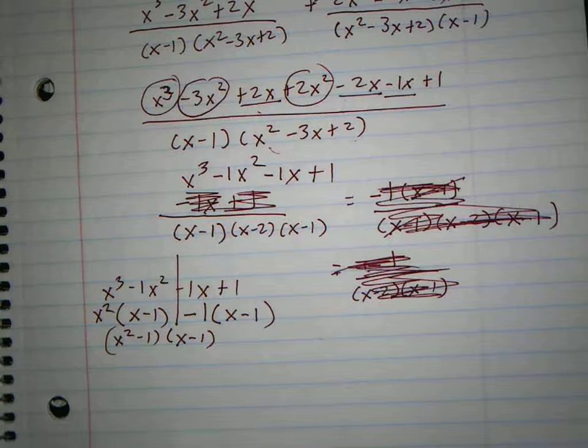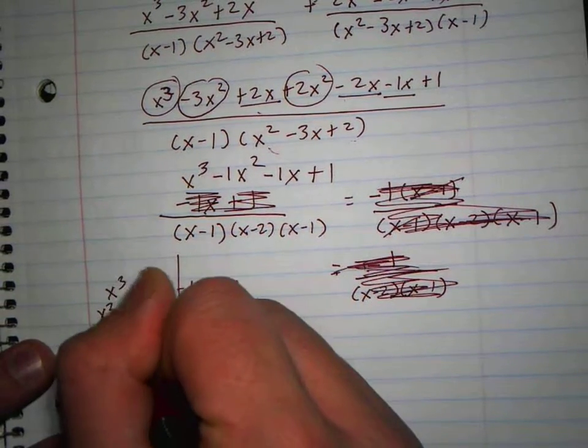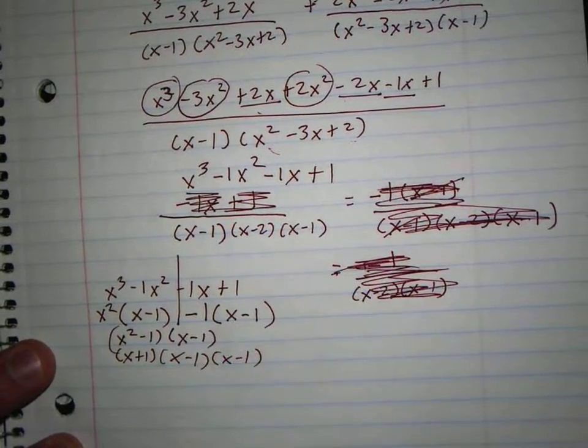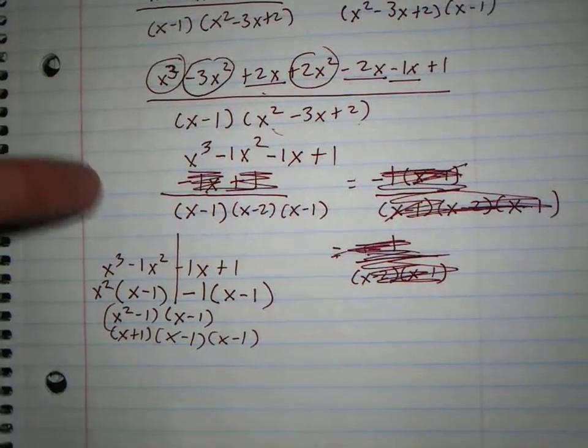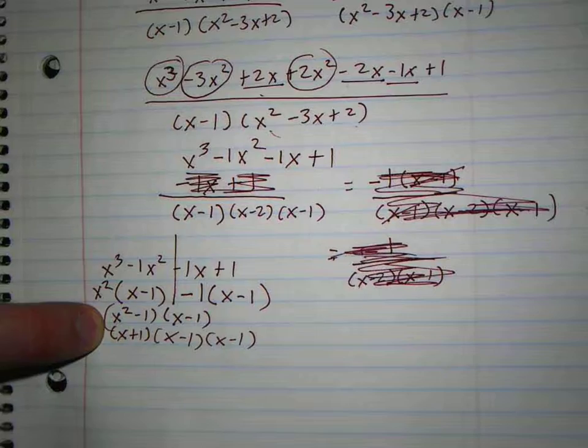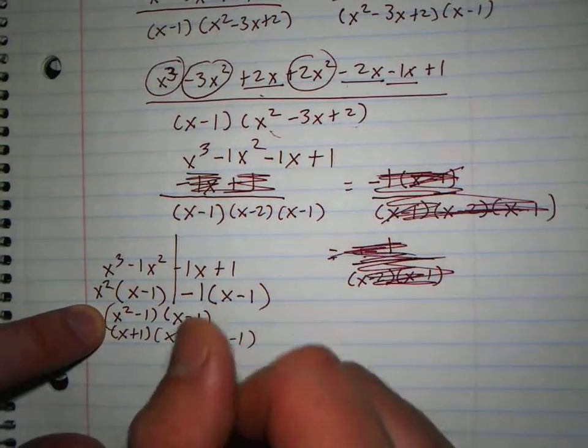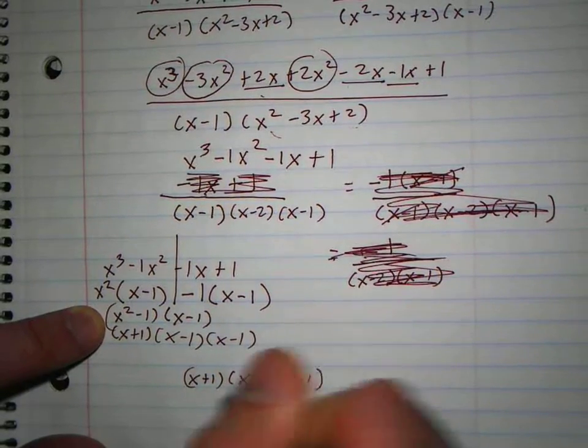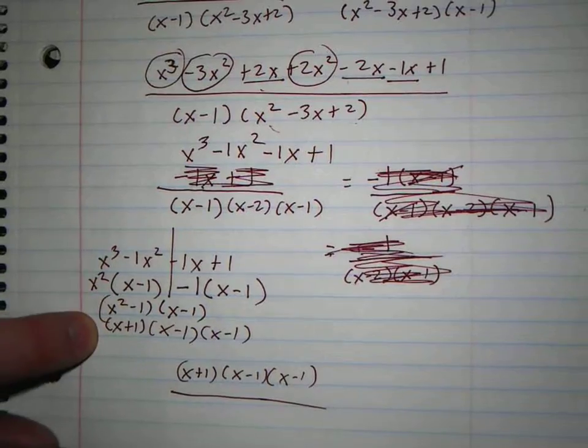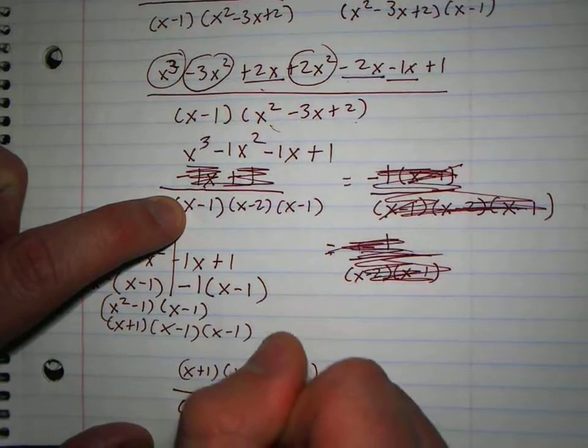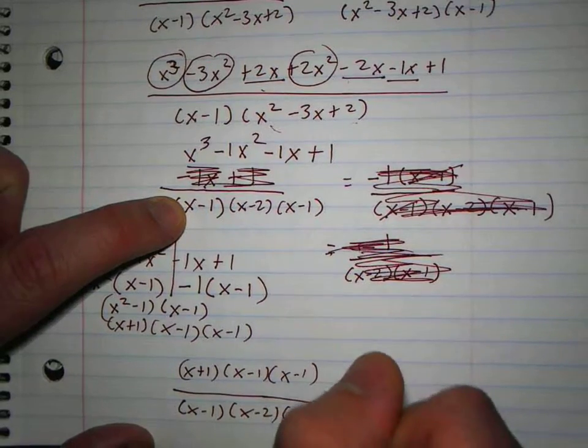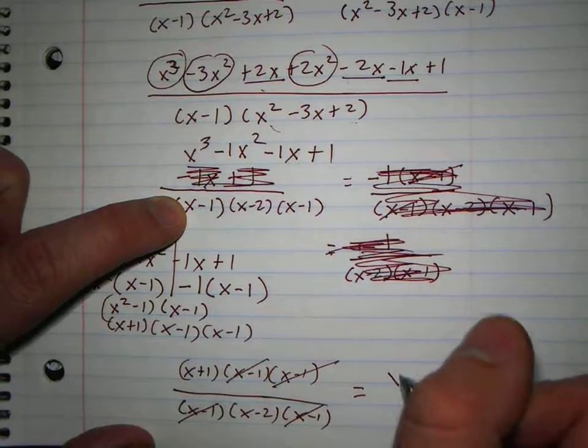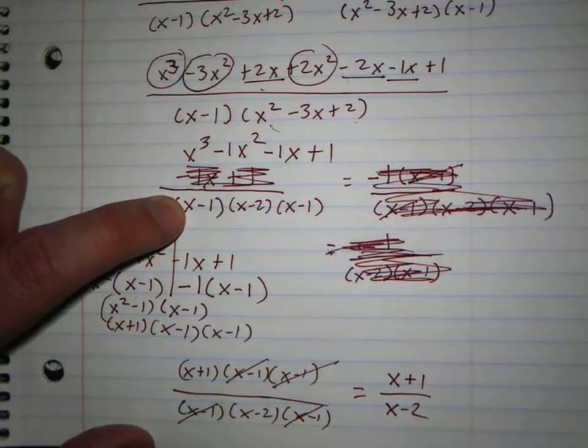So here I would get x squared minus 1 and then x minus 1. And then x squared minus 1 factors. That's x plus 1, x minus 1. So I can replace this with x plus 1, x minus 1, x minus 1. So this is the same thing as this, and that's over x minus 1, x minus 1. X minus 1 cancels, x minus 1 cancels, so I get x plus 1 over x minus 2.